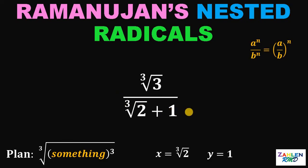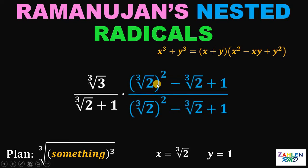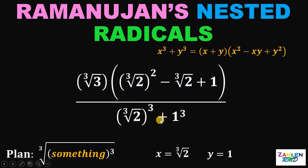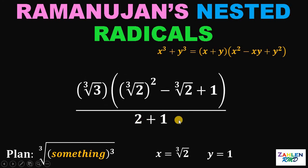What we're going to do now is rationalize the denominator. In order to do that, we will use the sum of cubes identity: x cubed plus y cubed equals x plus y times x squared minus xy plus y squared. In our expression, x must be cube root of 2 and y must equal 1. So let's multiply by cube root of 2 squared minus cube root of 2 plus 1, which is x squared minus xy plus y squared. Therefore, the denominator becomes x cubed plus y cubed, or simply cube root of 2 cubed plus 1 cubed. Cube root of 2 cubed is just 2 and 1 cubed is 1, so 2 plus 1 equals 3.